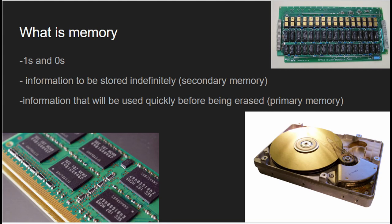Secondary memory, on the other hand, refers to non-volatile memory devices that store data permanently. Examples of secondary memory devices include hard disk drives, solid-state drives, USB flash drives, and optical disks such as CD-ROMs and DVDs. Unlike primary memory, data stored in secondary memory is retained even when the computer is turned off. Both primary and secondary memory are essential components of a computer system, and their performance and capacity can significantly impact the speed and efficiency of a computer's operations.